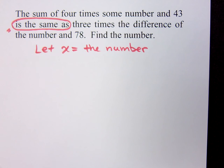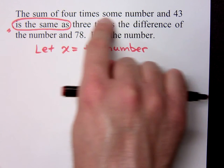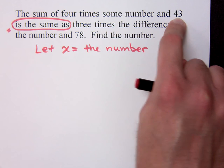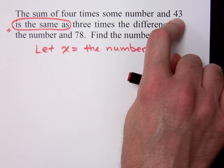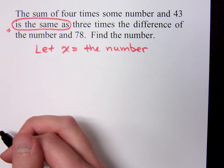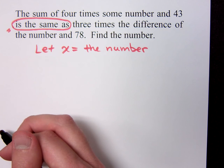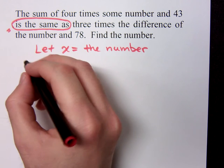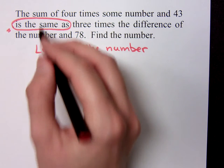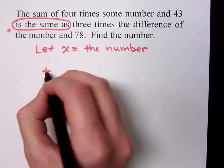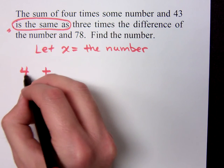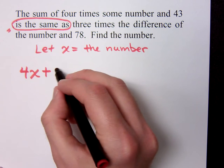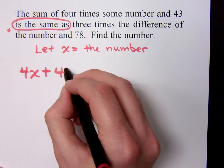Before I get to the equal sign, I see this: the sum of four times some number and 43. How do you write that? The sum means I'm adding — four times some number, which is 4x, and the other part is 43. So we have 4x plus 43.